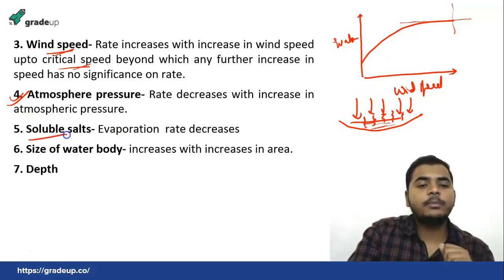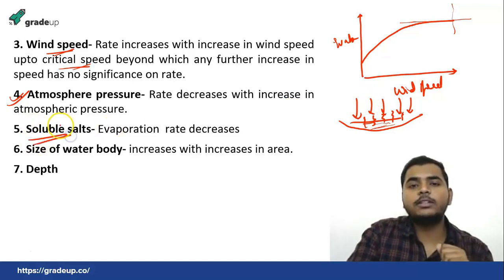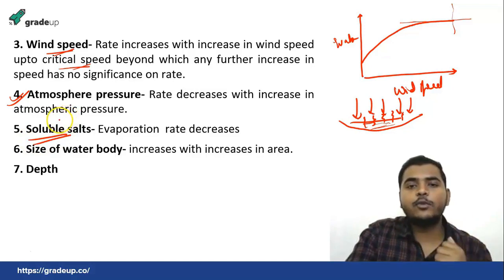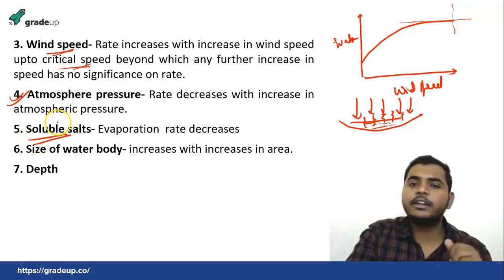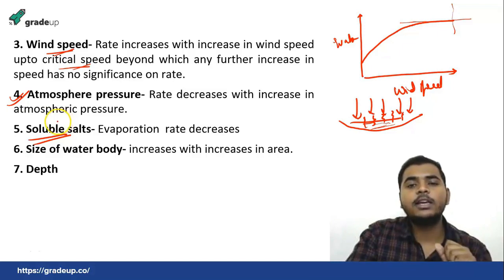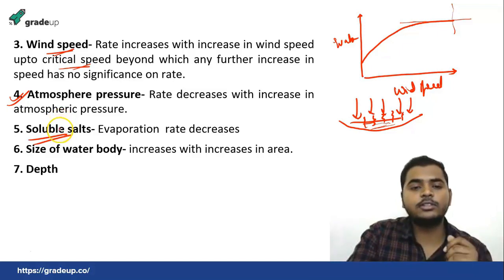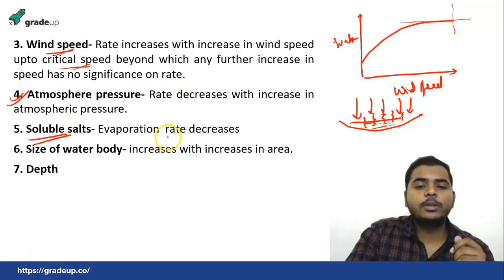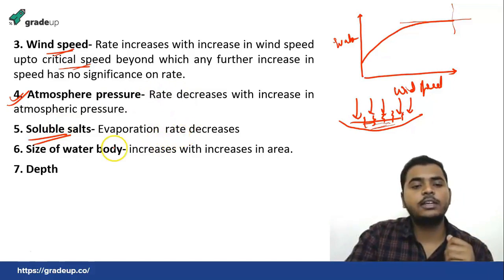The next factor is the presence of soluble salts. In the case of oceans or sea water, the evaporation rate is less, and that is due to the presence of soluble salts. So evaporation rate decreases with the presence of soluble salts.